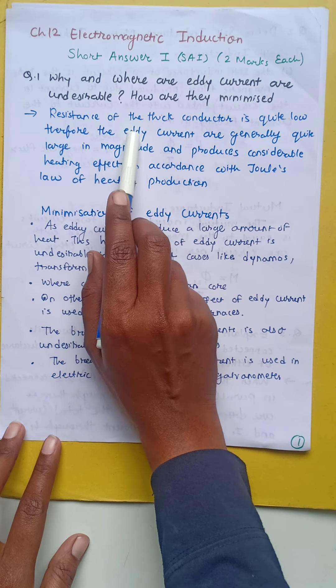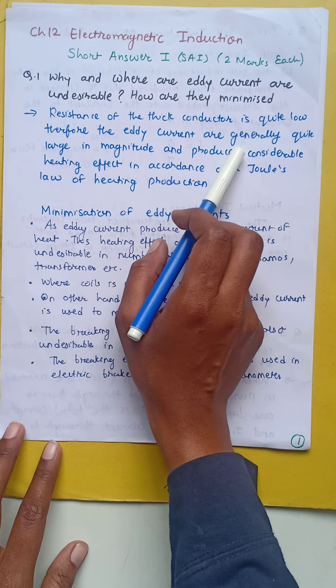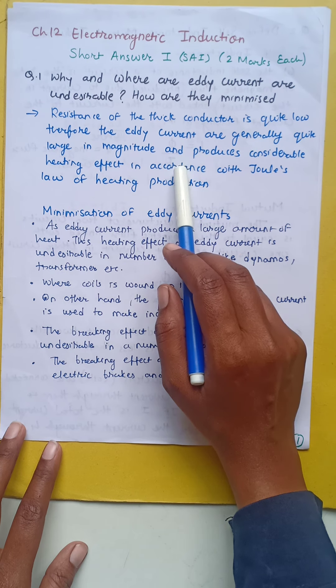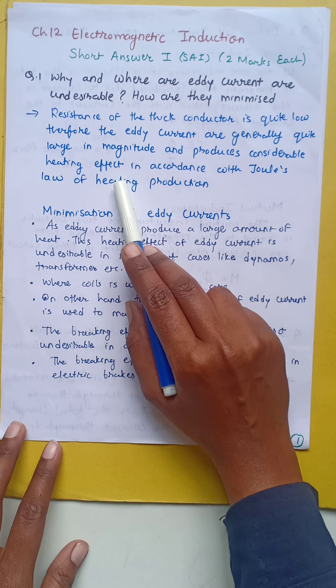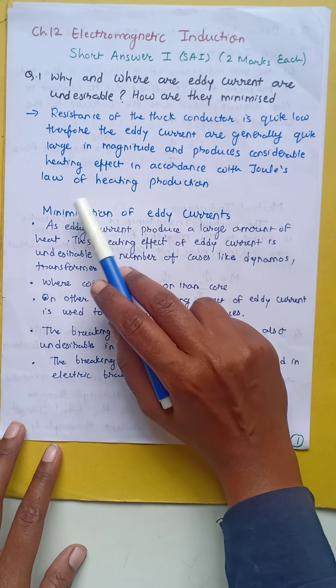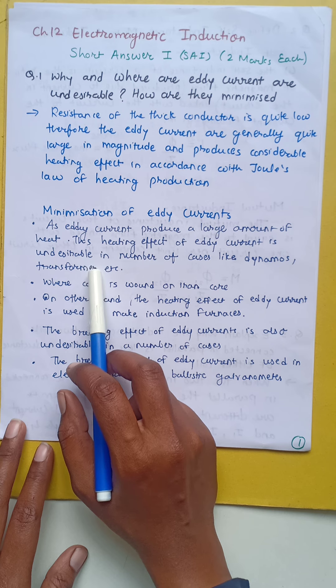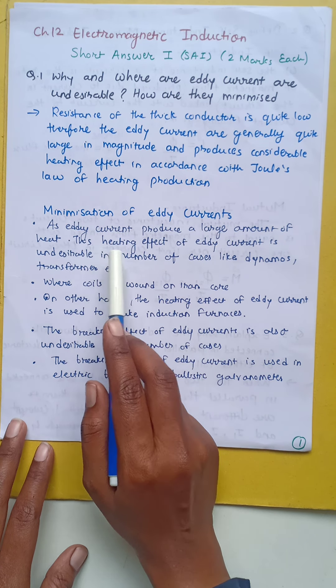The resistance of a thick conductor is quite low. Therefore eddy currents are generally quite large in magnitude and produce considerable heating effect in accordance with Joule's law of heating. So to minimize this undesirable eddy current, as eddy current produces a large amount of heat, this heating effect of eddy current is undesirable.